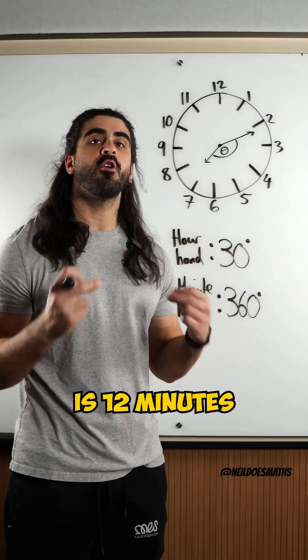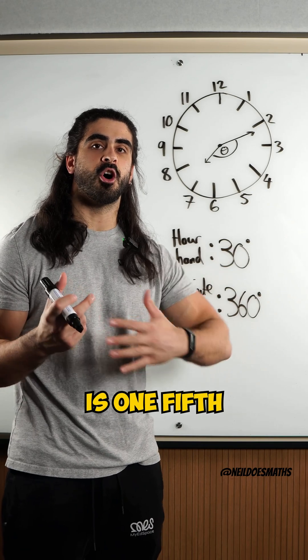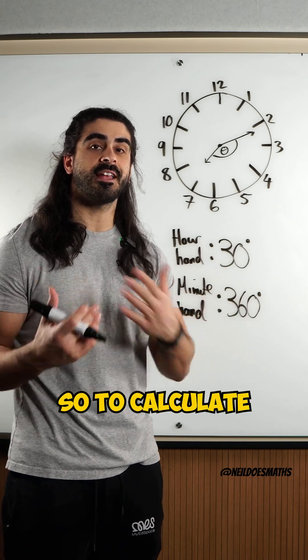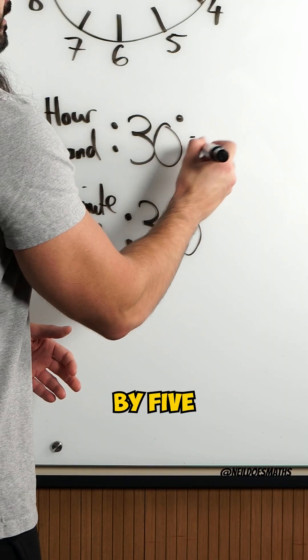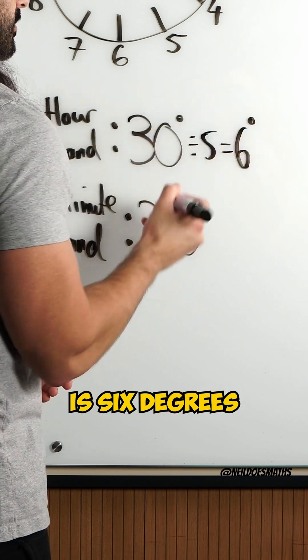The next thing is 12 minutes is 1/5th of a full hour. So, to calculate our rotation, we just need to divide these full hours by 5. 30 divided by 5 is 6 degrees.